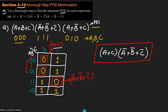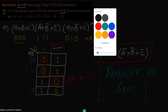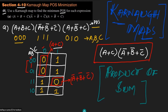So the simplified or minimum product of sums form is (A + C)(A' + B' + C'). This is the product of sums simplification obtained by using Karnaugh maps. That is the solution to our question, covering all steps required for POS minimization. I will see you with more interesting questions in the upcoming video.